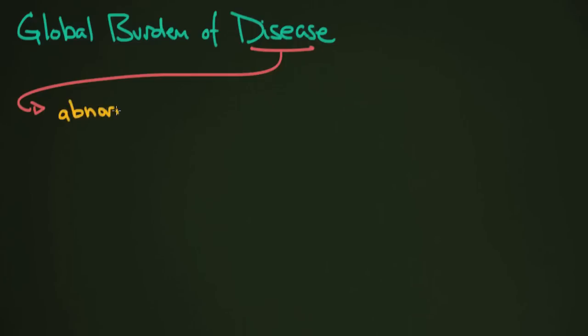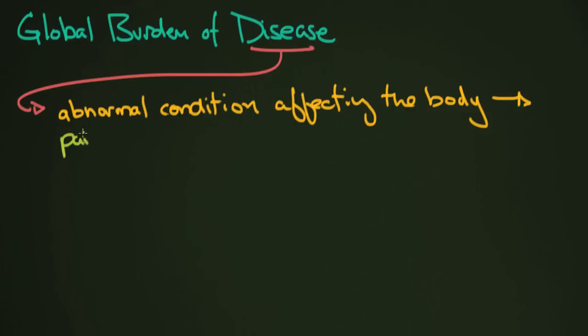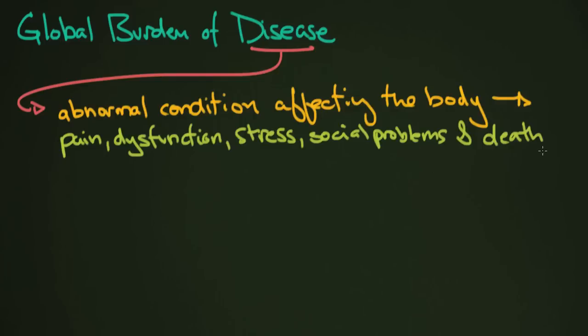I mean, I think everybody in their head kind of has an idea of what disease means. But I didn't really ever look up the definition because I kind of always thought, well, I guess I know that. But basically it means an abnormal condition affecting the body. And in humans, this leads to pain, dysfunction, so things not working very well, stress, so emotional stress, physical stress, social problems. So maybe a disease causes you not to be able to get along with your friends. And then in really bad cases, when things are not going right at all, it can result in death. And that's a very, very bad thing, obviously.